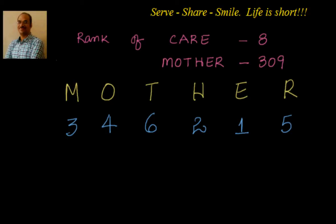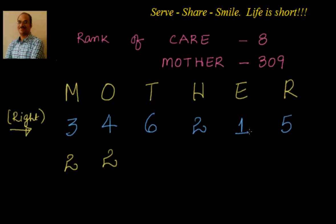Now starting from left to right, the rank of M is 3. How many letters to the right are less than 3? E=1 and H=2 will come before M, so 2 are less than 3. For O (rank 4), how many to the right are less than 4? Again 1 and 2, so 2. For T (rank 6), how many to the right are less than 6? We have 2, 1, and 5 — all three are less than 6, so write 3. For H (rank 2), only 1 is less, so write 1. For E (rank 1), 0. For R (rank 5), 0.